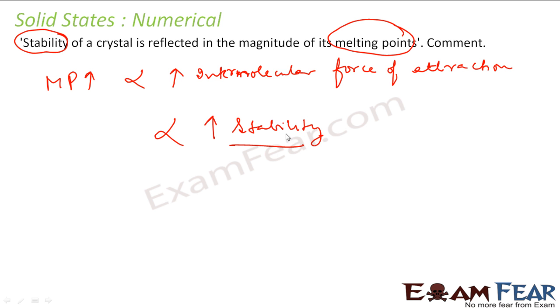So intermolecular force of attraction is the sandwich here, is the key here. So melting point, high melting point means high intermolecular force of attraction, and high intermolecular force of attraction also means high stability. So high melting point means high stability. Correct.